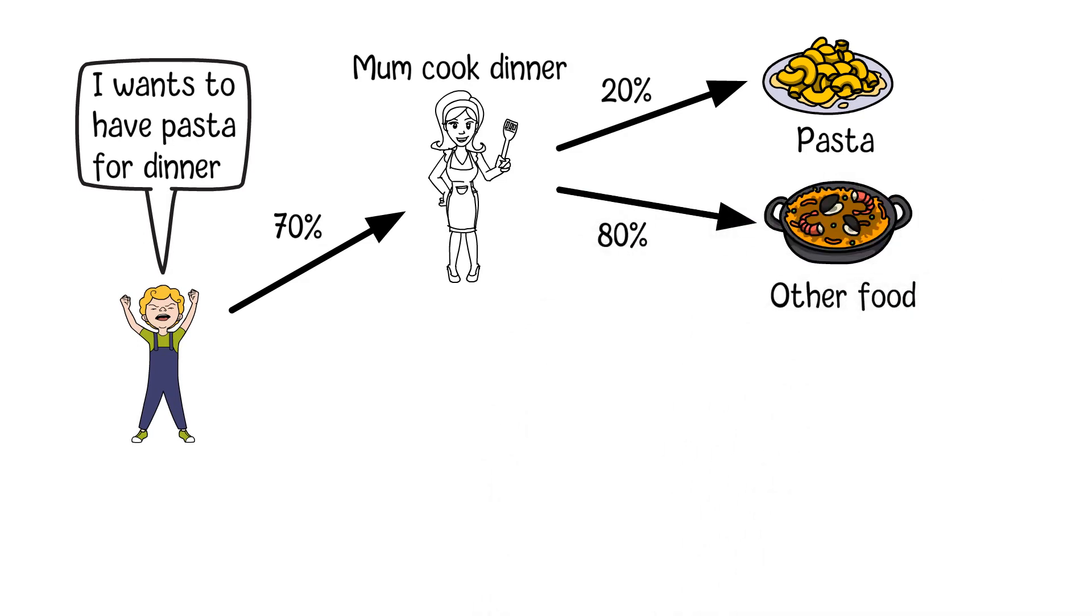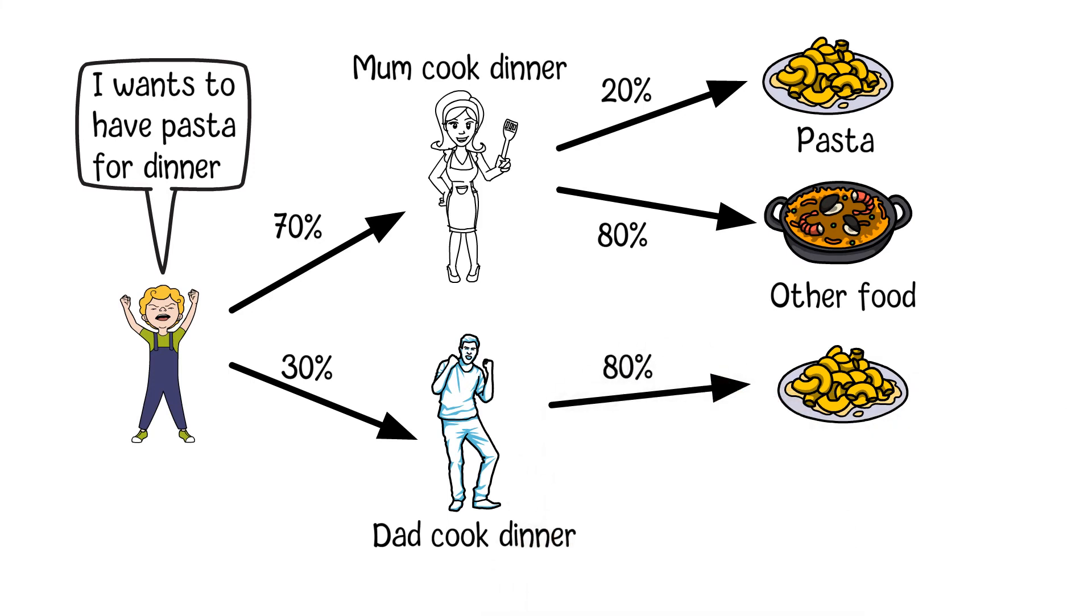On the other hand, Bob's dad has a 30% probability to cook dinner for Bob tonight. Different from Bob's mom, Bob's dad is a pasta lover and there is a probability of 80% he will cook pasta if he will prepare the dinner.